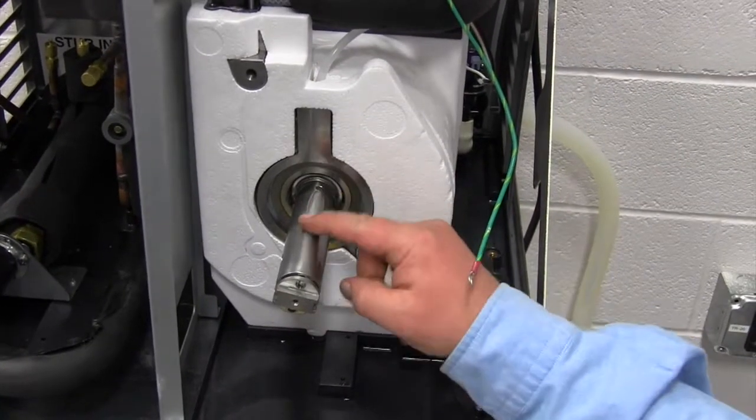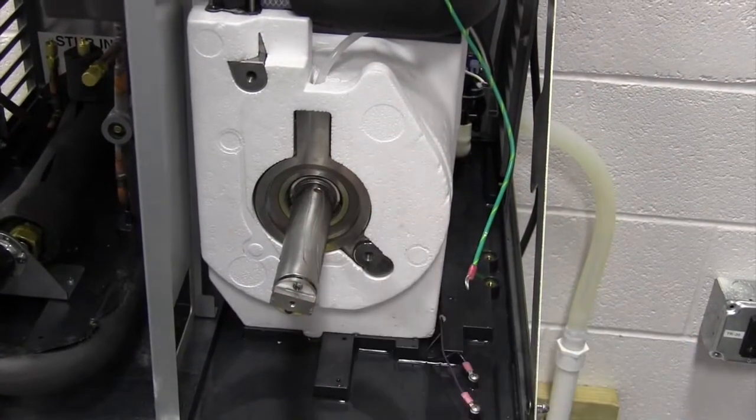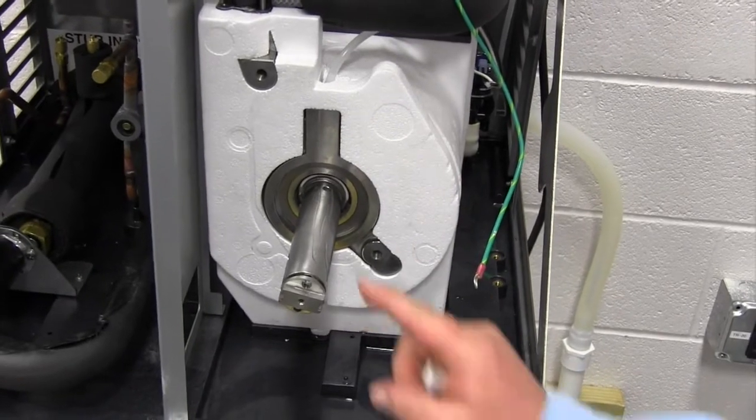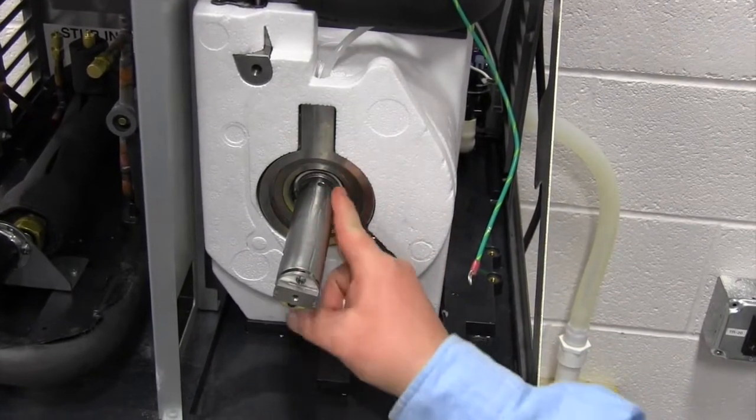We're going to put the gear motor back on. First thing we're going to do is put some petrogel here so that the auger shaft doesn't adhere to the gear motor.